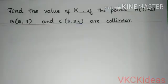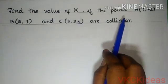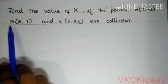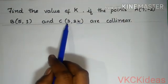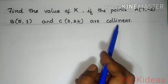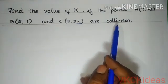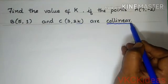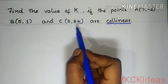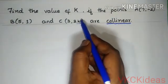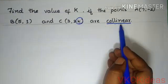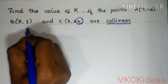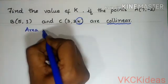Here is one more problem with the same concept. Find the value of k if the points A(7, −2), B(5, 1) and C(3, 2k) are collinear. They have given the condition that these points are collinear and asked you to find the value of k. Since they have given it to be collinear, we can take the area to be 0.